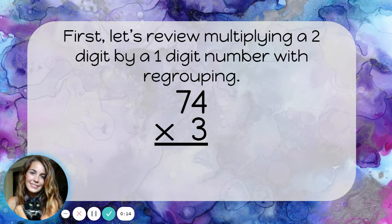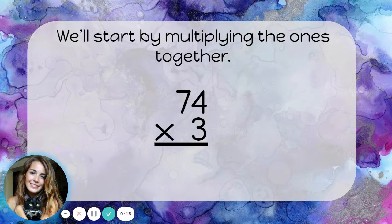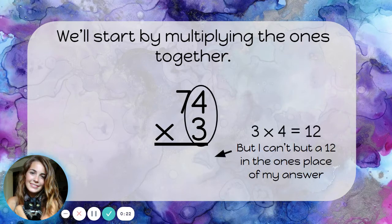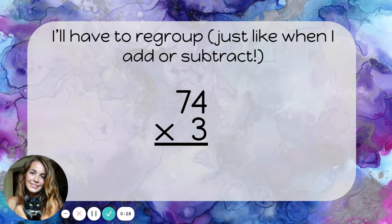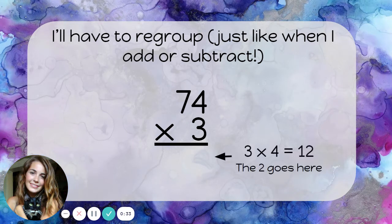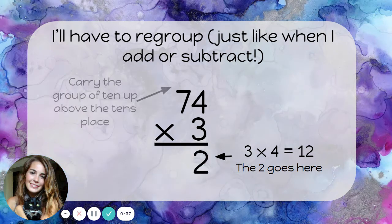Let's multiply seventy-four times three. We'll start by multiplying the ones together. Three times four is twelve. But I can't put a twelve in the ones place of my answer. I'll have to regroup, just like when I add or subtract. Three times four is twelve, so the two goes here, and I'll carry that group of ten up above the tens place.